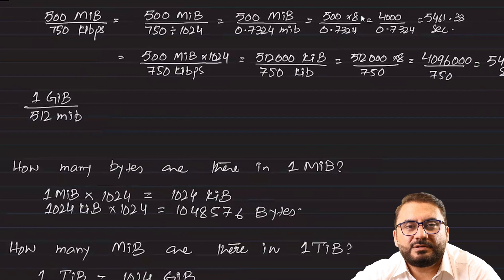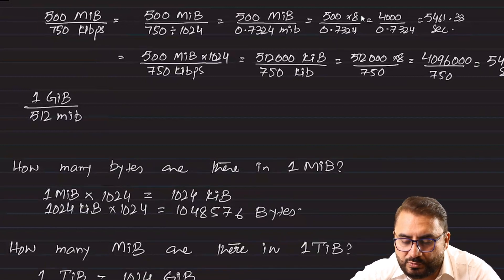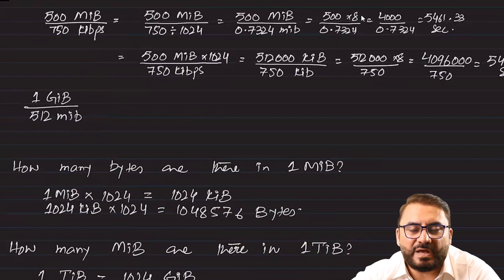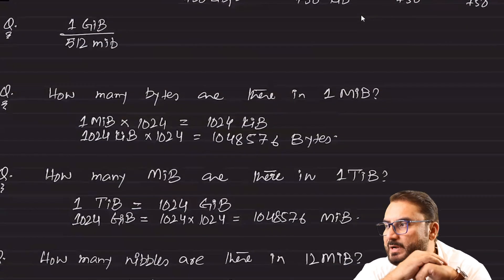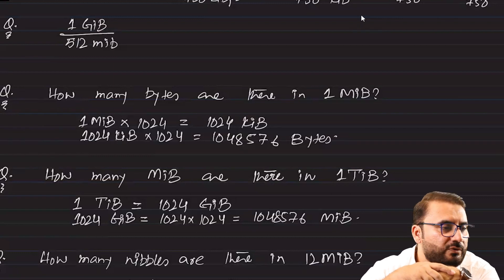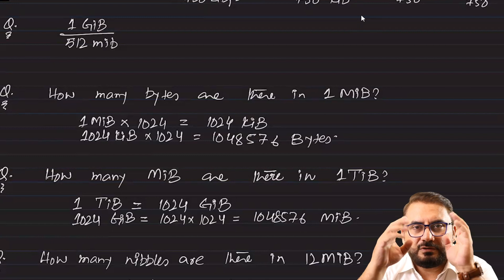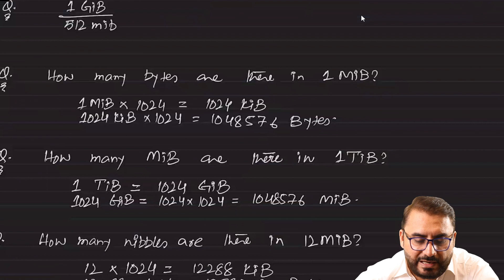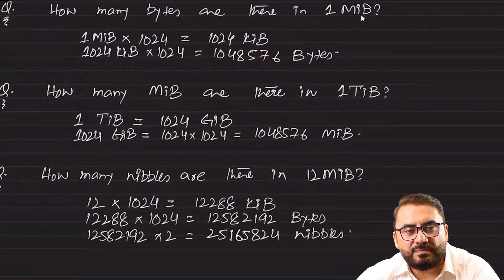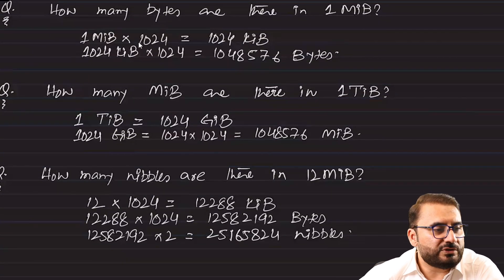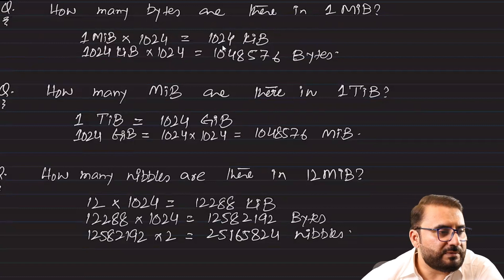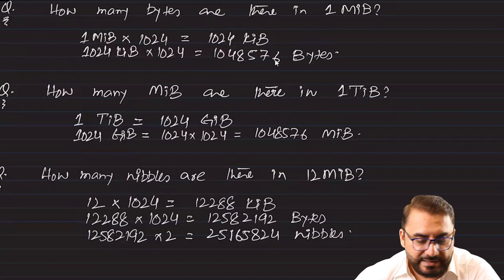Another question: 500 MiB file over 750 kibibit per second connection. Divide 750 by 1024 to convert to mebibits, giving 0.7324 mebibits per second. Then convert the file: 500 MiB times 8 gives 4000 mebibits. Divide 4000 by 0.7324 and that gives 5461.33 seconds. You can also convert in the other direction — convert mega to kilo in the file size — and the result remains the same.